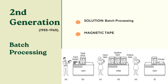To overcome this issue, the concept of the batch system was introduced. A batch of jobs was collected and read onto a magnetic tape in the input room using a small inexpensive computer like the IBM 1401. This tape was then carried to the machine room and mounted on a tape drive. The operator loaded a special program — the ancestor of today's operating system — which read the input, executed programs, and wrote output to a second tape, reducing processing time significantly.